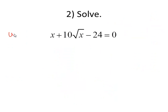Same pattern again. So I'm going to let u equal the square root of x. u squared plus 10u minus 24 equals 0. Solve by factoring. u plus 12 times u minus 2 is equal to 0.